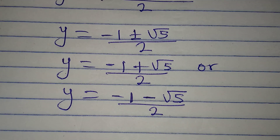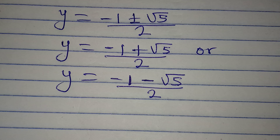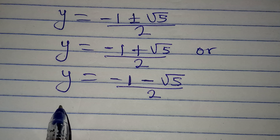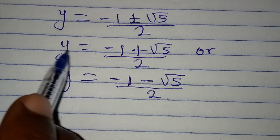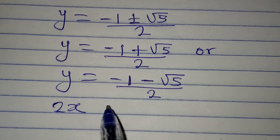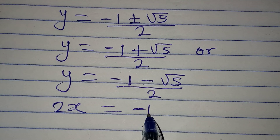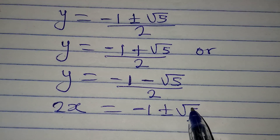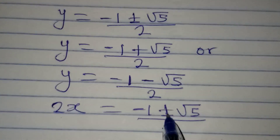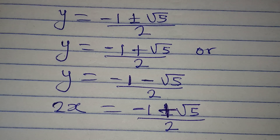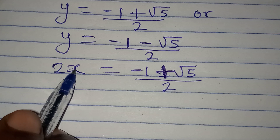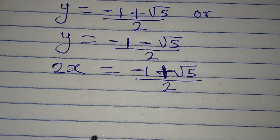Remember we are not looking for the value of y — we were originally looking for the value of x. Since y equals 2x, we write 2x equals minus 1 plus or minus square root of 5, over 2. To get the value of x, we divide both sides by 2.